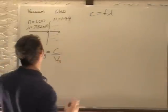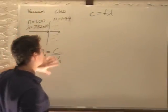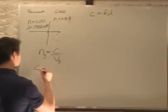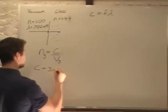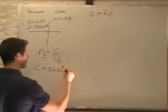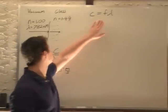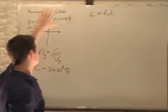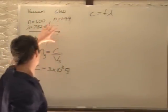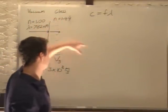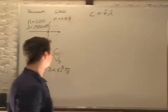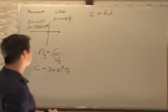c equals f lambda is for the vacuum, because c is our constant of 3 times 10 to the 8 meters per second. We can figure out the frequency, which is the same in both cases, and then figure out the velocity in the glass, which will give us lambda. Let's find the frequency first.